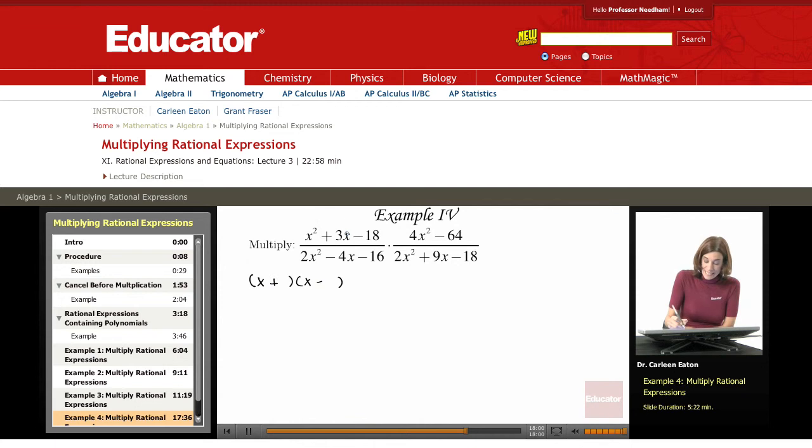Factors of 18—some possibilities are 1 and 18, 3 and 6, 2 and 9. I want factors that are going to add up to 3x. These are too far apart, that's not going to happen, so that's not a possibility.